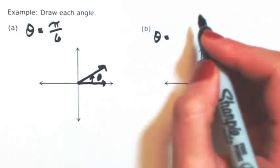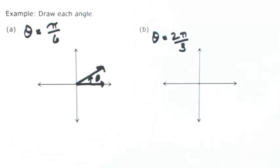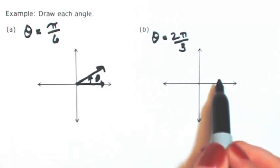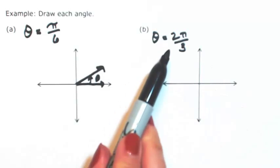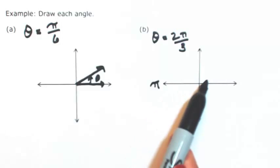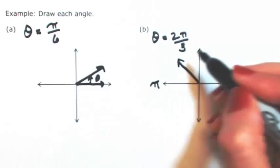Let's say that theta is 2 pi over 3. So again, one full revolution is 2 pi. So half a revolution is 1 pi. So if I want to go 2 thirds of this, that will give us our angle.